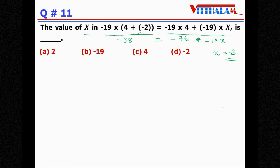We will not do that. See if you know the distributive property, so this is nothing but minus 19 into (4 plus minus 2). If I take minus 19 common, so in bracket it is 4 plus x.